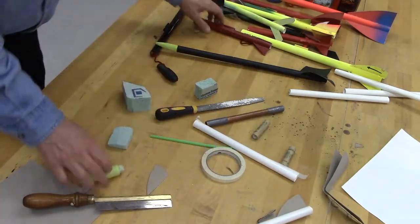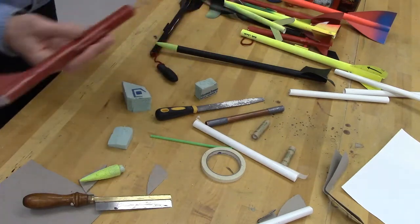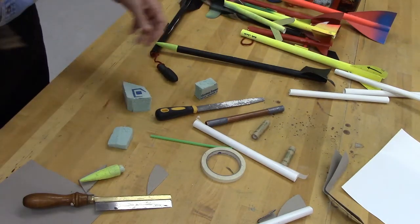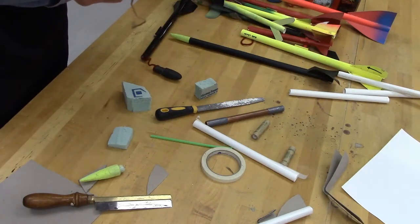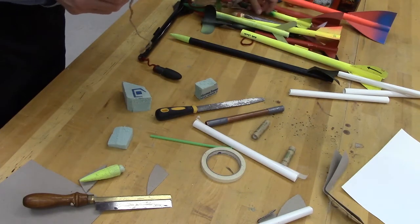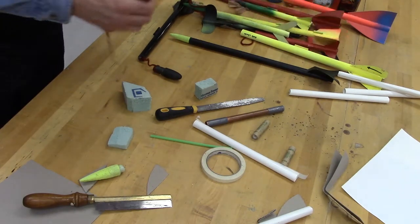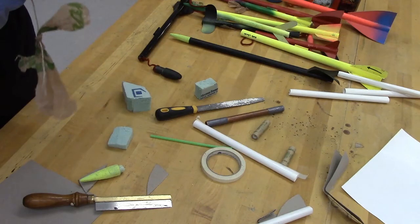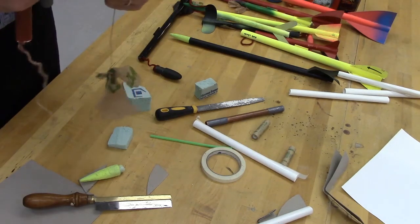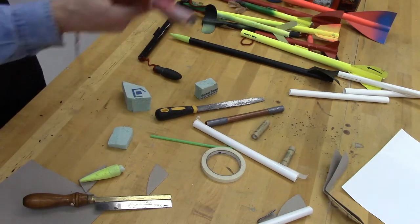And then you can have a recovery system which looks like this. You take string or yarn, I've used whatever is close, and you adhere that to the inside of the fuselage and then to the bottom of your nose cone and put some plastic in there or something like that.